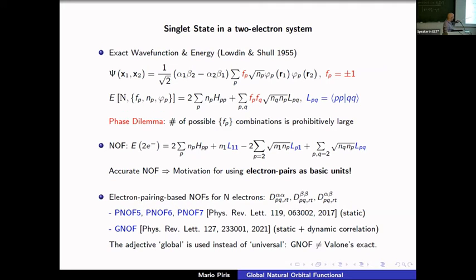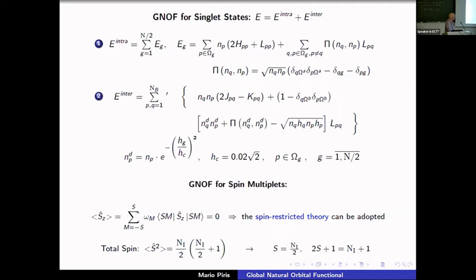For the singlet state of two electrons, this is why we use electron pairs as basic units and propose reconstructions for the spin components of the two-particle matrix. From this we obtained PNOF5, 6, and 7, which are good for many static-correlation problems. Now I will focus on the latest functional, GNOF, which seems to handle static and dynamic correlation in a more balanced way. It is still a GKL functional.